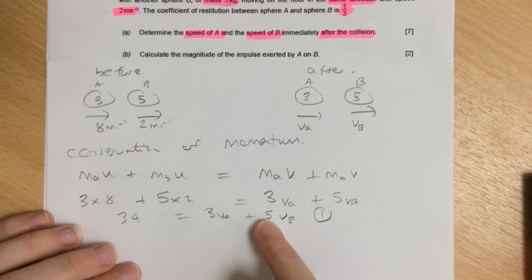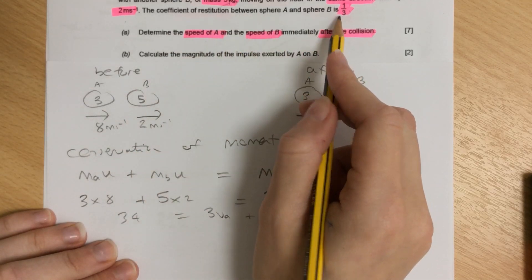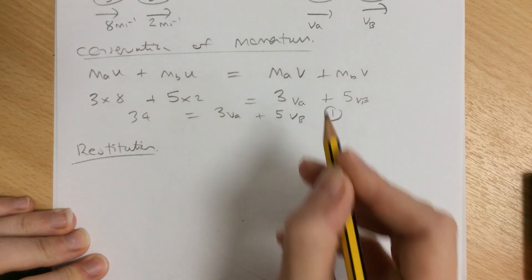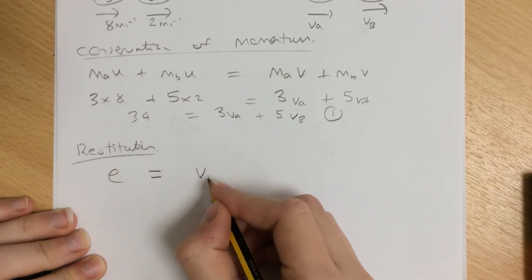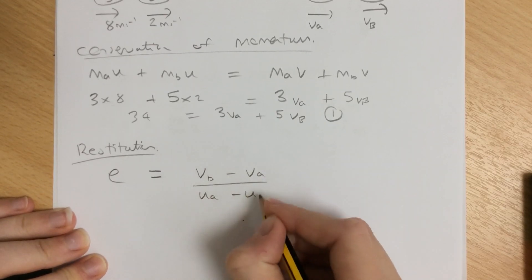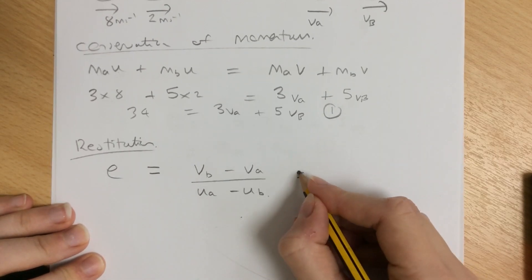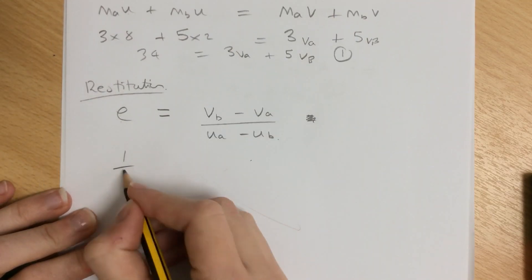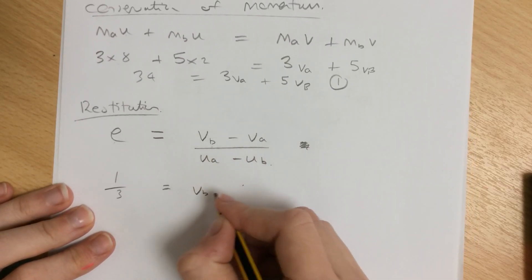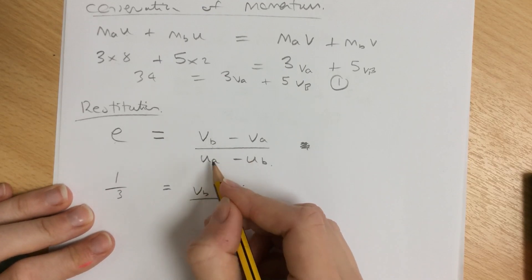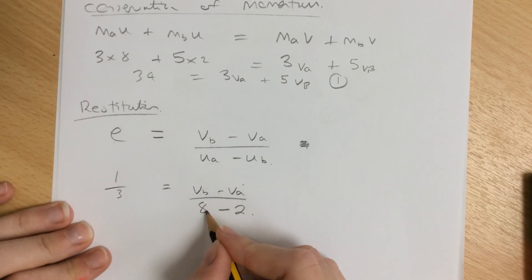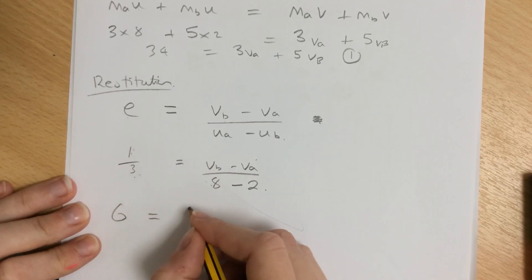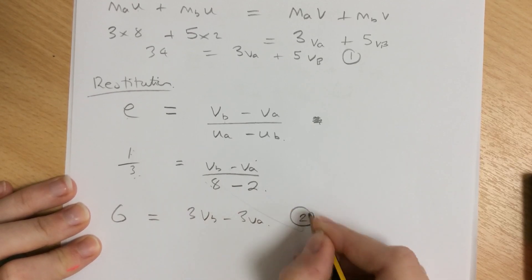Next, we use the coefficient of restitution. The law of restitution states that E equals VB minus VA over UA minus UB. We know E is one-third from the question. VB and VA are unknown, but the initial speed of A was 8 and B was 2. So one-third equals VB minus VA over 8 minus 2. Cross-multiplying gives us 6 equals 3VB minus 3VA. That's our second equation.